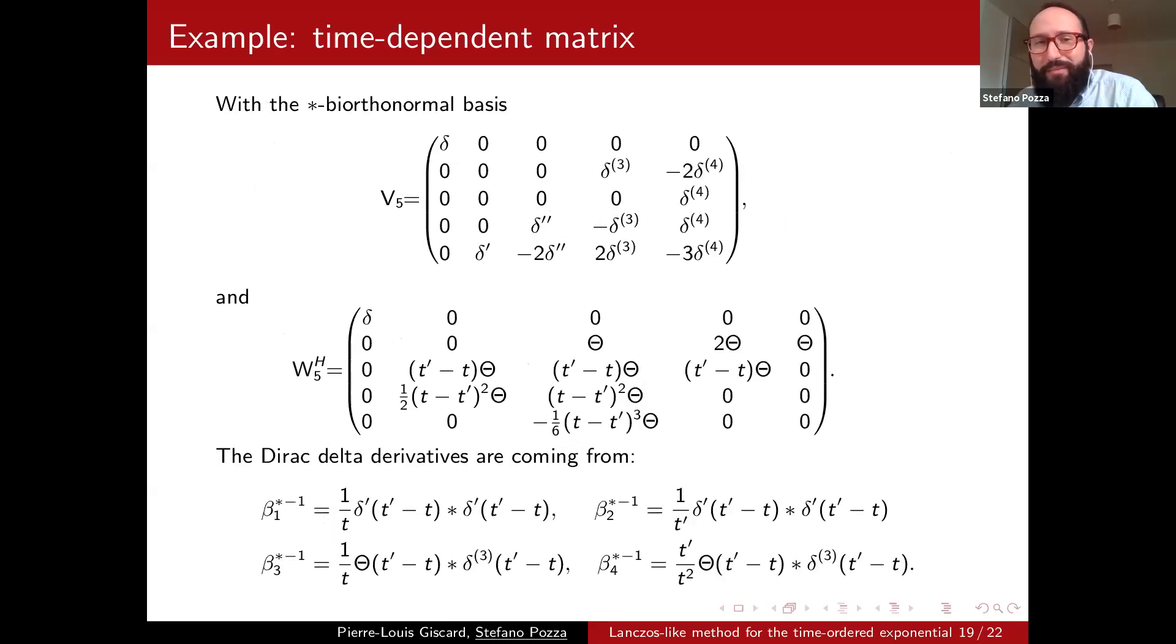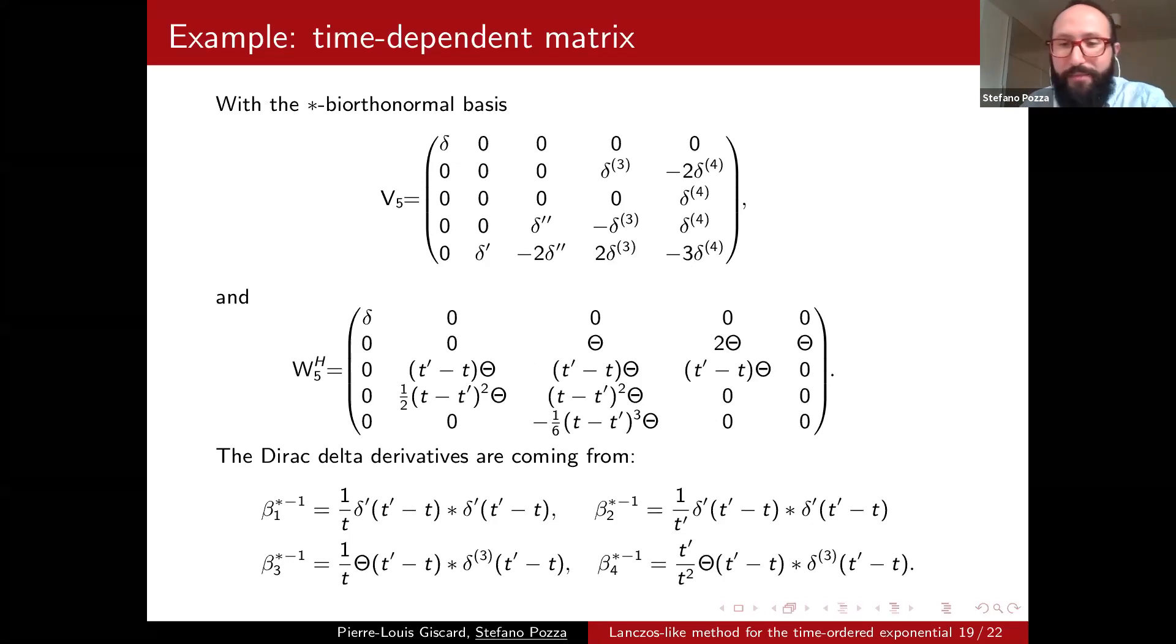What is more revealing of the complication of all the process are the Krylov spaces. So w is quite fine. Again, we just have some polynomials, but v is made of derivatives of Dirac delta functions. So and you can see that there is much more to say about what we have been doing in these slides, but I'm really out of time now.